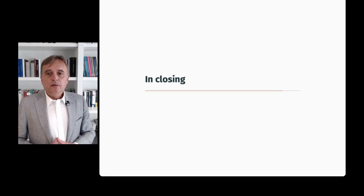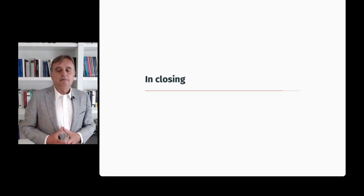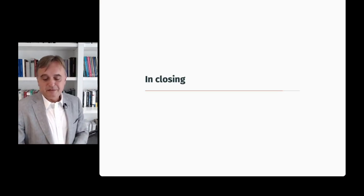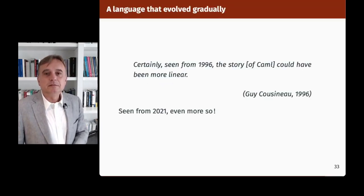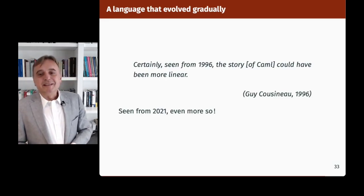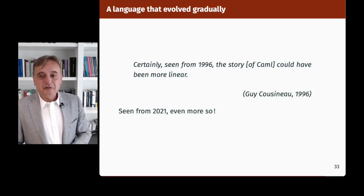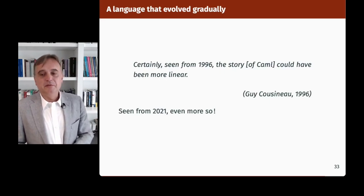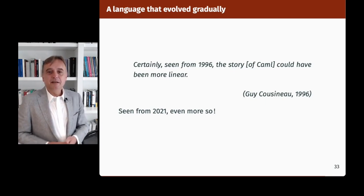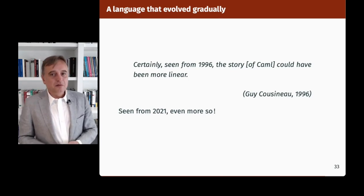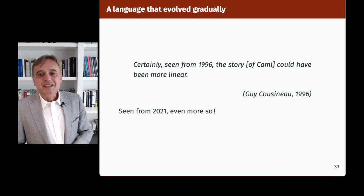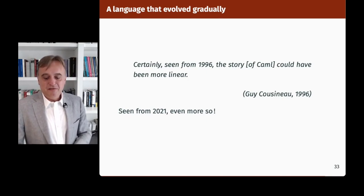So for this retrospective, a few concluding remarks. First, OCaml is a language that evolved gradually. In 1996, Guy Cousineau wrote a short history of Camel up to 1996 and concluded that certainly, seeing from 1996, the story could have been more linear. And well, since 2021, it could also have been more linear. But that's the way languages evolve, I guess. I would claim that the language is still faithful to its roots: it's a mostly functional language but has imperative and object-oriented power when needed. It is very much structured around types — types provide the skeleton of the language, give its structure all the time.